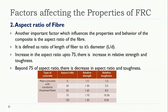Increasing the aspect ratio up to 75 improves relative strength and toughness. Beyond 75, there is a decrease in toughness and it negatively affects the mechanical properties of FRC, as well as causing workability issues. Therefore, the aspect ratio should be maintained in the range of 40 to 80.